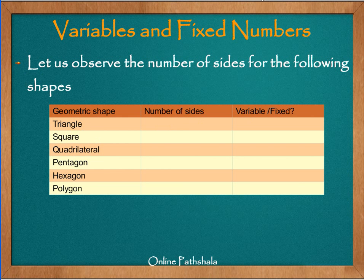So let us start with this exercise. First we have a triangle. How many sides in a triangle? There are three sides. Now, are the number of sides in a triangle variable or fixed? Can it have more than three sides or less than three? No, by definition we know that a triangle has three sides. It means it is fixed.